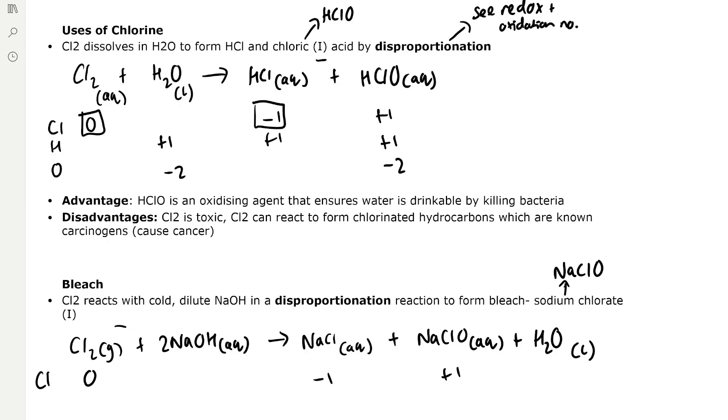For uses of chlorine, chlorine dissolves in water to form hydrochloric acid and chloric one acid. That one represents the oxidation number of the chlorine atom. Chloric one acid is HClO, and this reaction occurs by disproportionation.